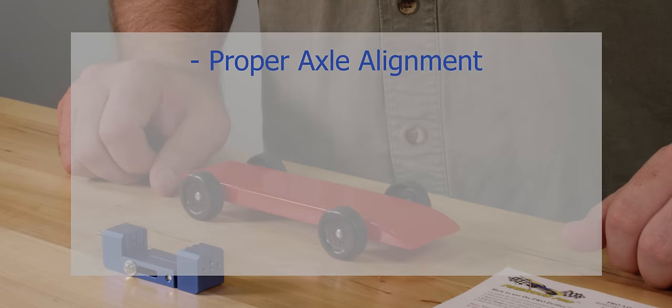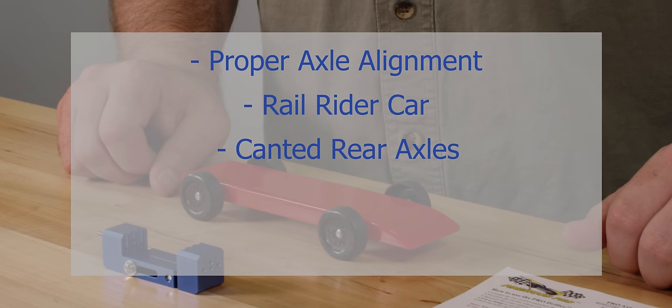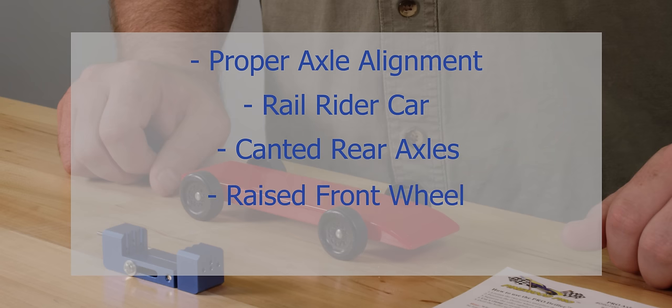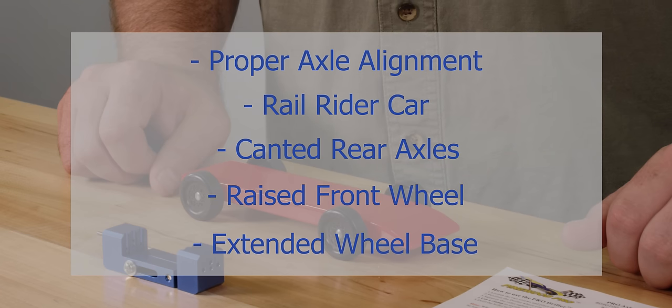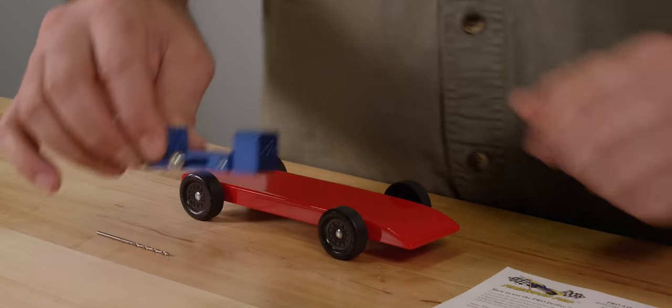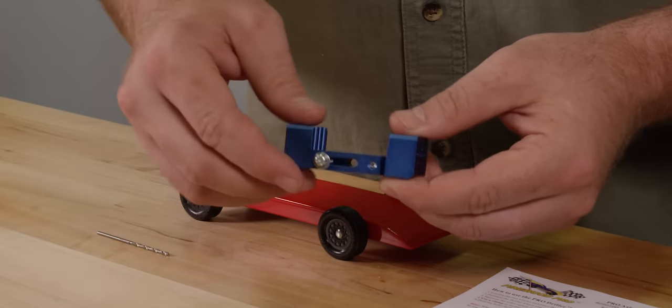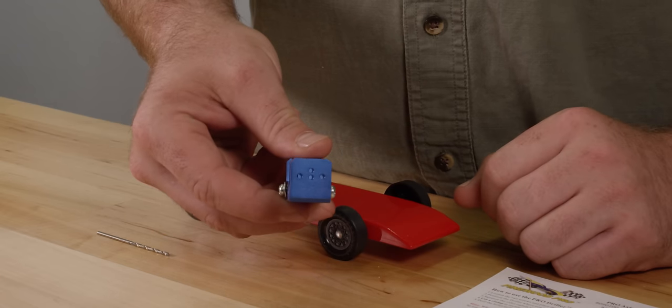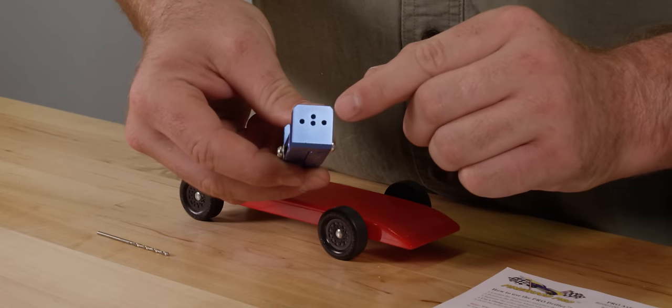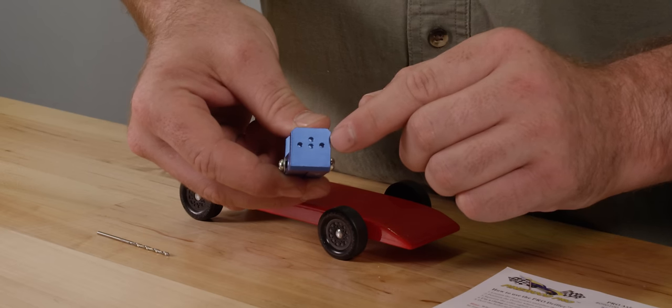The fastest Pinewood Derby cars have proper axle alignment to steer the car straight or into the rail if you're building a rail rider car. The fastest cars also have canted rear axles and if your rules allow, a raised front wheel and an extended wheelbase. This video will show you how to do all of those things in a matter of minutes. Using the Pro Driller is simple and fast. Let's take a quick look at each of these speed techniques to see how they will make your car faster.